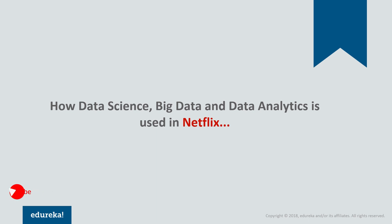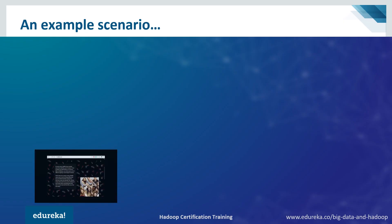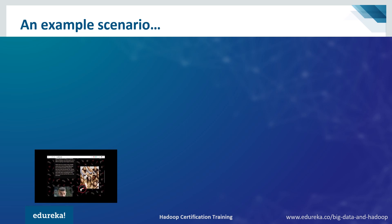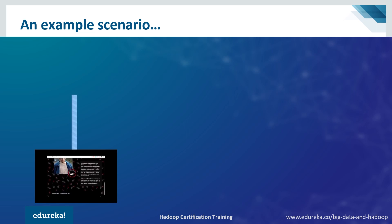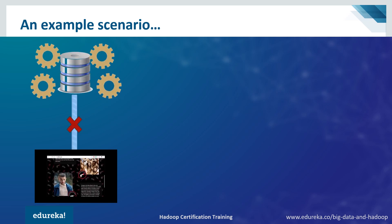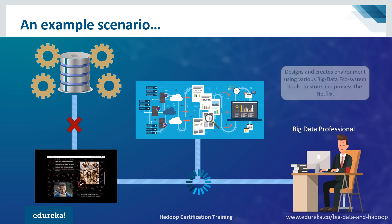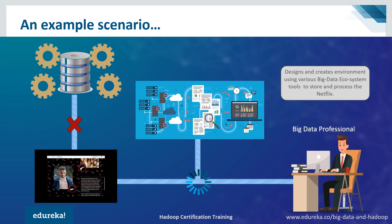Now let's understand how we garner the benefits by combining all three together. Let's take an example of Netflix and understand how data science, big data, and data analytics join forces. First, the role of a big data professional: Netflix generates a huge amount of unstructured data, and if you try to process this using traditional data processing systems, it will not work. So the big data professional creates an environment using various big data ecosystem tools to store and process the Netflix data.